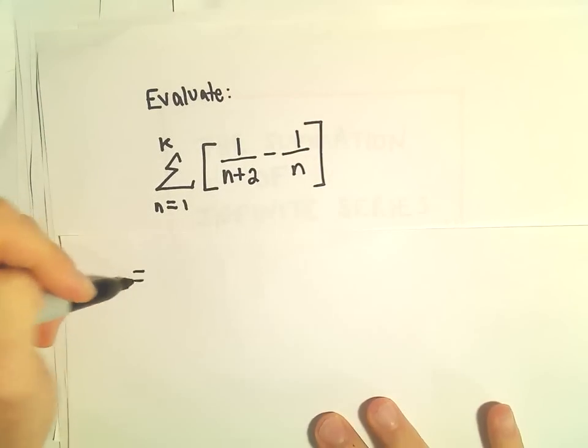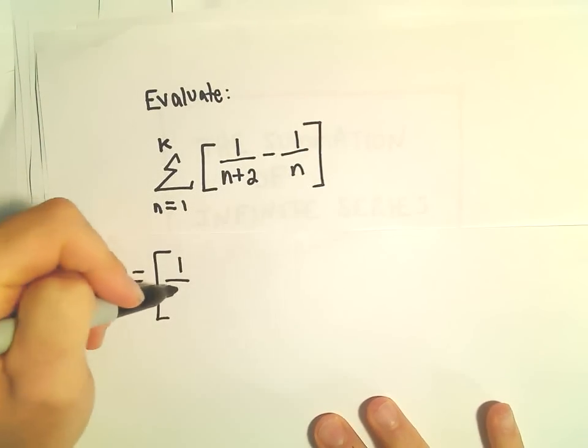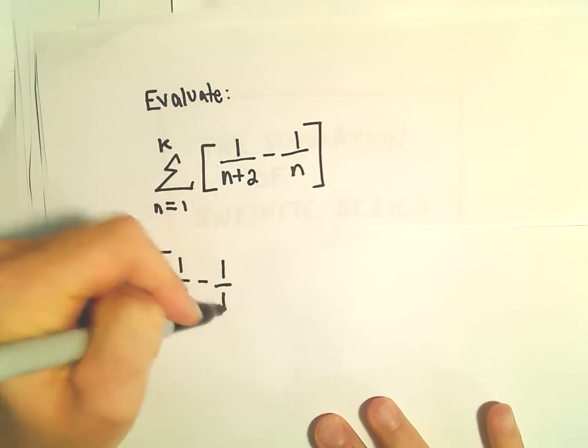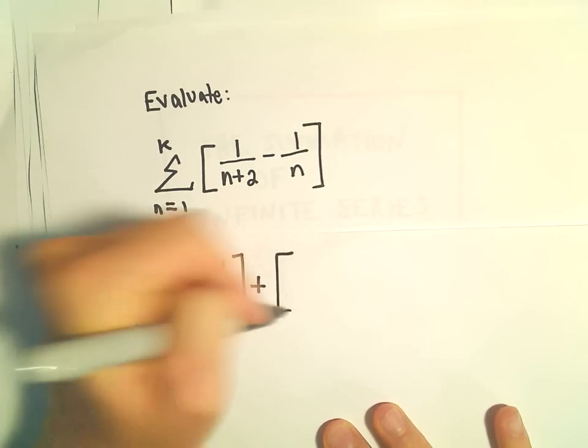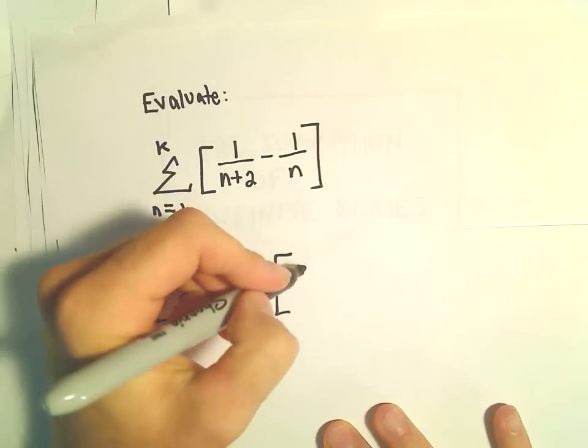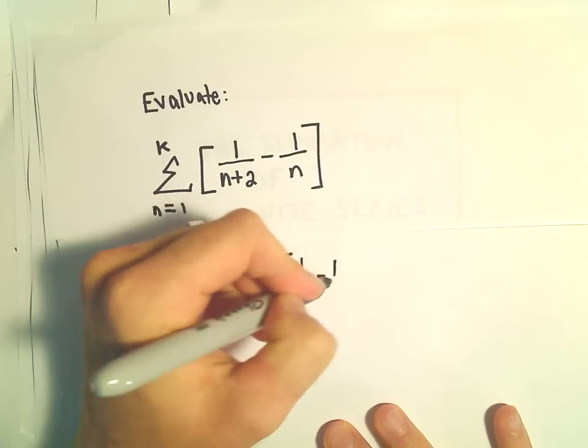So let's see. If we plug in 1, we'll get a third minus 1 over 1. Plus, and then if we plug in n equals 2, we'll get a fourth minus a half.